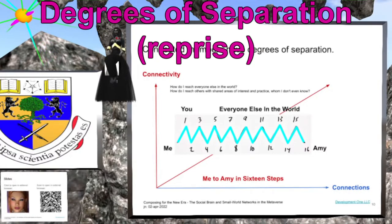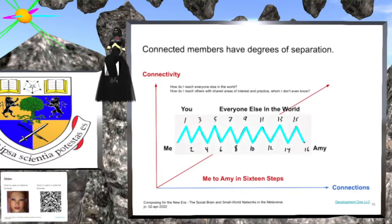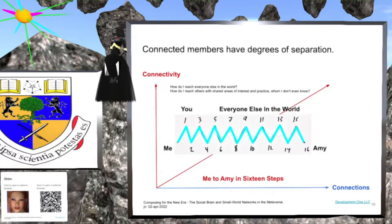Connected members have degrees of separation. A diagram shows me connected to you by one step. The light blue line shows that it would take us 16 steps to reach Amy, who represents a person that neither you nor I know, but who would be a good ally — if only we could reach her.